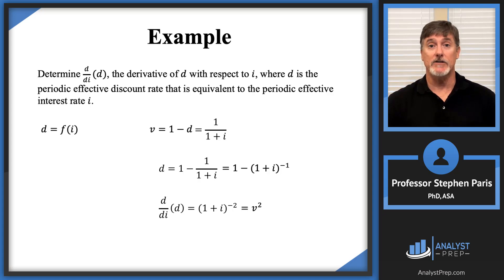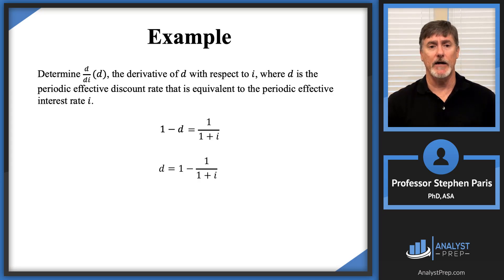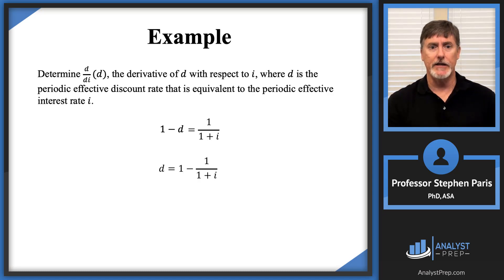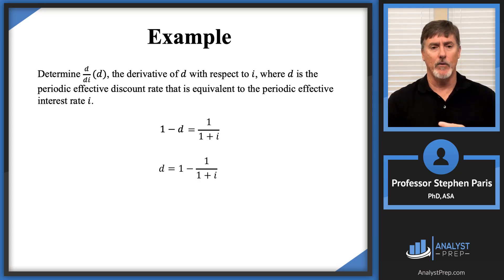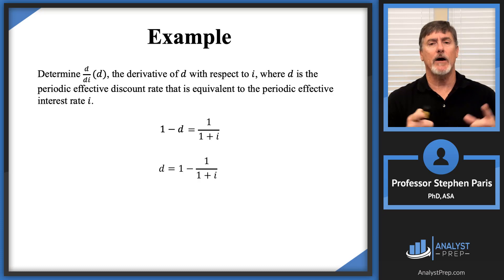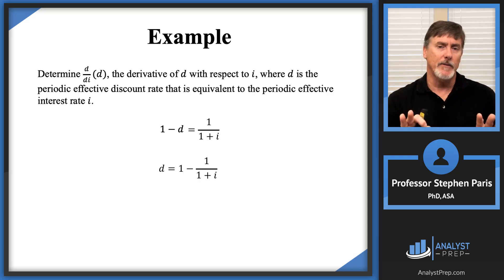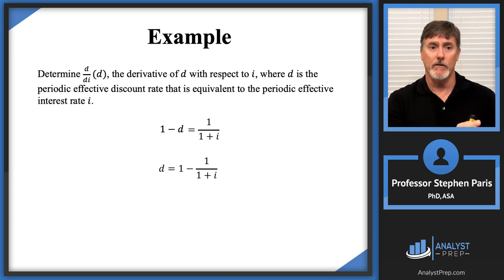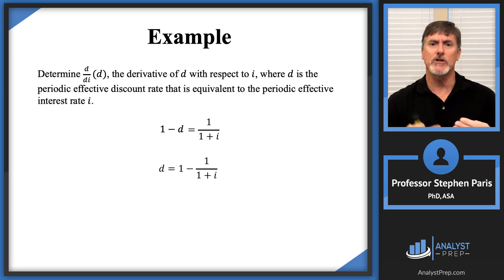That's actually the correct answer. Now let's go back to the first couple of lines: one minus D is the periodic discount factor using D, and one over one plus I is the periodic discount factor using I. Those two are equal to each other when they're equivalent rates. I'm already done with the problem, but I want to show you another useful relationship between D and I.